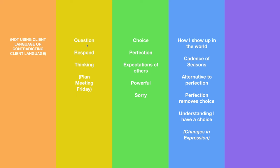So we've got the twos — question, respond, thinking. Not in this session but words like plan, meeting, Friday. Then in this session, some really good threes: choice, perfection, expectations of others, powerful, the word sorry. Using these on their own would represent listening to the client, but missed opportunities for some really strong things. Also, a simple change in expression — when the coach leverages 'when you were just smiling as you were talking about all of that, what's the smile about?' That's a nice four out of five, just pointing to that change in expression, change in energy, change in tone.